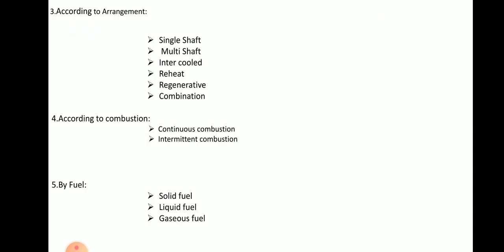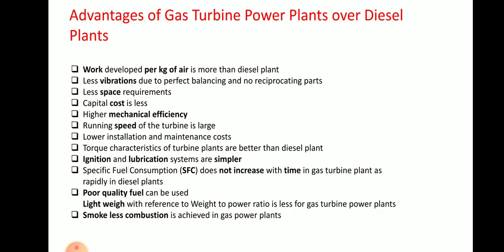Now, what are the advantages of gas turbine power plants over diesel plants? First, work developed per kg of air is more than diesel plant, so the weight of this power plant is less. Next, less vibration due to perfect balancing and no reciprocating parts, because generally it is rotational — so no reciprocation and no problem of balancing.